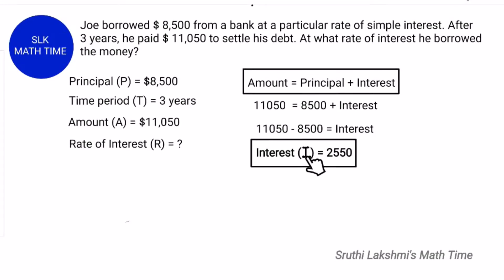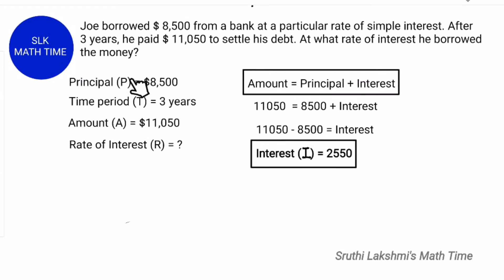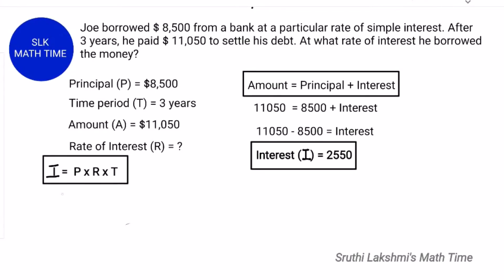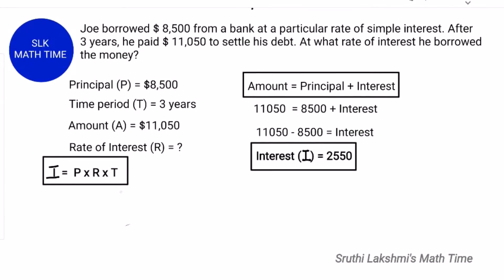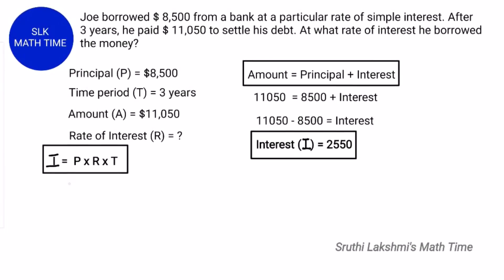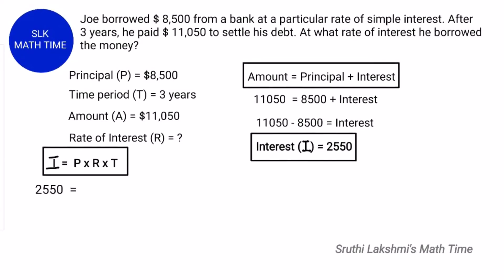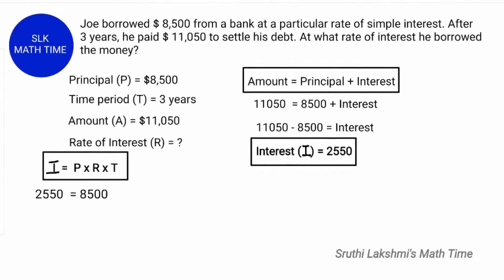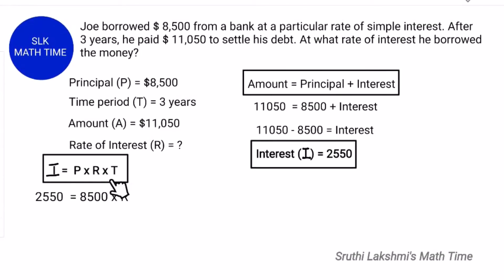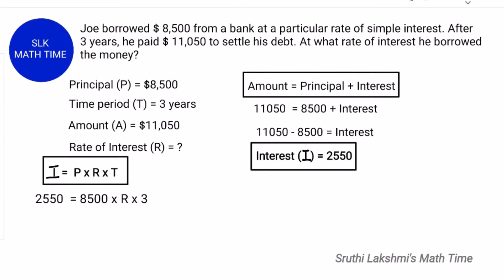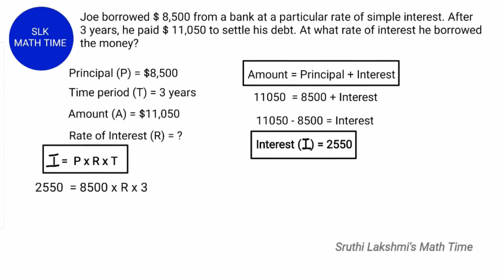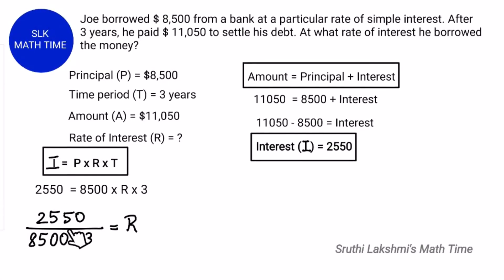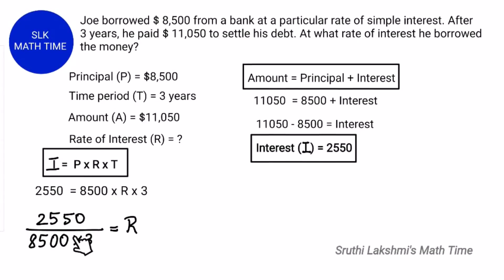Now since we know the principal, the time period, and the interest, we can easily find the rate of interest using the formula: interest = principal into rate of interest into time. Let's substitute: interest is $2550, principal is $8500, rate of interest is R, and the time period is 3 years. When we bring 8500 into 3 to the other side it becomes the denominator, so R = 2550 by (8500 into 3).